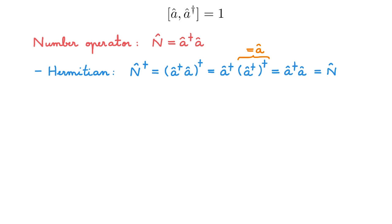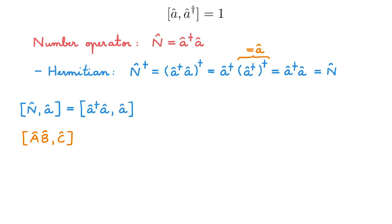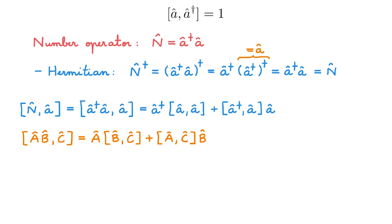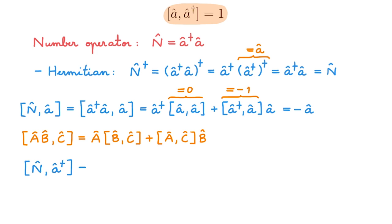The second thing to do is calculate the commutation relations between the number operator and the ladder operators. Starting with the commutator of N and a, we plug in the definition of N and use the general result for the commutator of AB with C. One of the resulting commutators vanishes, and using the commutation relation between the ladder operators the other gives minus 1, so overall we get minus a. Repeating the same exercise for the commutator of N with a dagger, we find it equals a dagger. You don't need to memorize these, but we will use them constantly, so keep them handy or be ready to derive them.